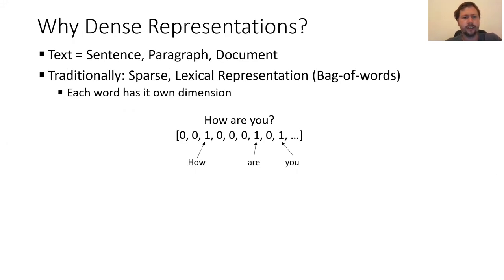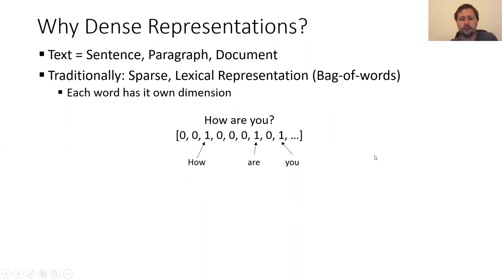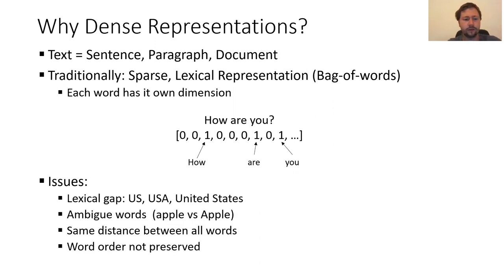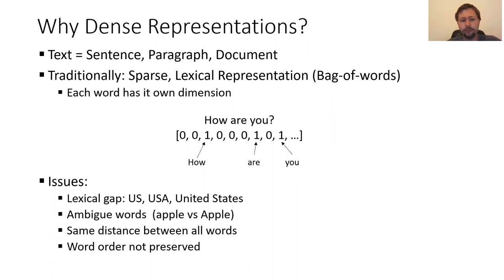So why dense representations for text? Traditionally we used sparse representations, also known as bag of words, where each word has its own dimension. For the sentence 'how are you,' every word is encoded at one position. This has several issues. The first is the lexical gap: US, USA, and United States are three different dimensions in the vector space. Sometimes you have 'apple' the fruit and 'apple' the company at the same position in this vector.